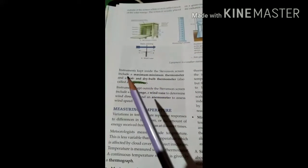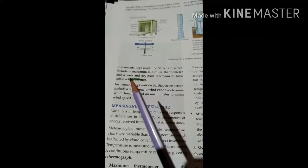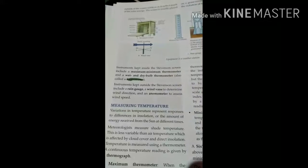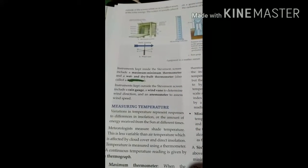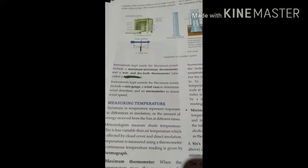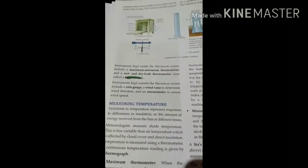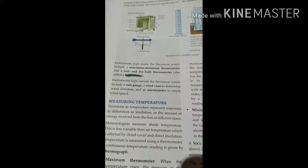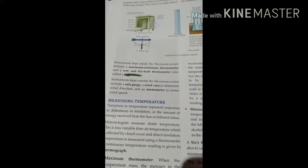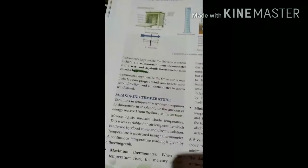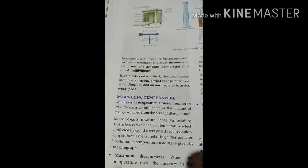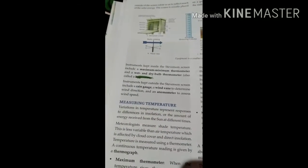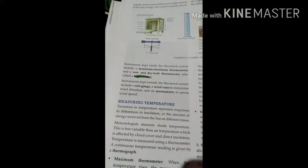Instruments kept inside the Stevenson screen include maximum-minimum thermometer and wet and dry bulb thermometer called hygrometer. Instruments kept outside the Stevenson screen include a rain gauge, wind vane to determine wind direction, and an anemometer to assess wind speed. Dear students, we will talk up to this point today, and in the next class we will continue with the next point, measuring temperature.